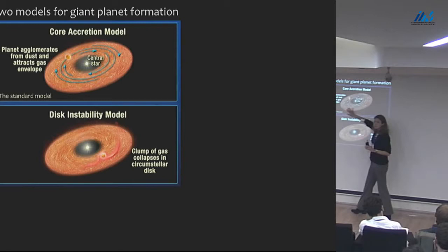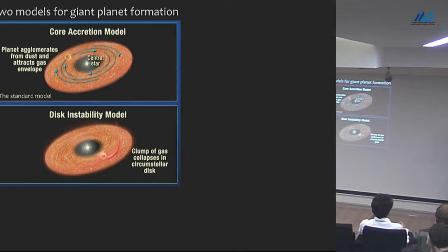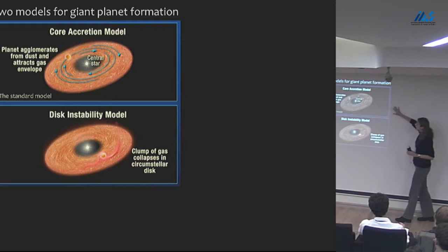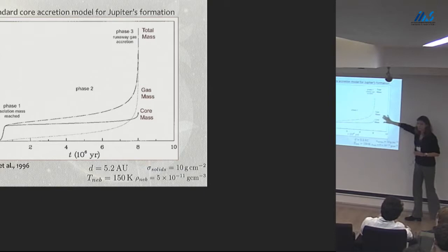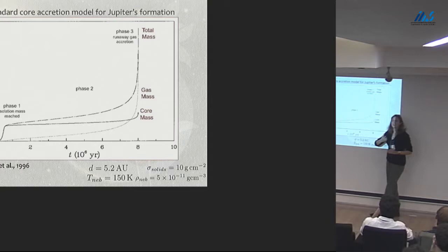I'm not going to argue that one model is right and one model is wrong — each has advantages and disadvantages, although it is rather accepted that it is really the core accretion model that is the dominating one. These are the three steps — I'm not going to repeat that. This is the figure you already saw — this is really the standard point of view of giant planet formation by core accretion, from the Pollack et al. 1996 paper.